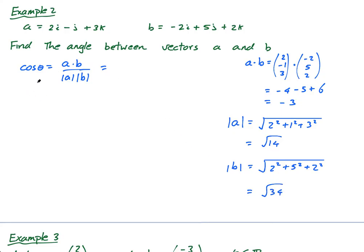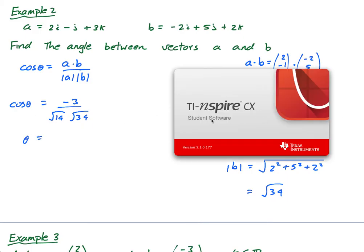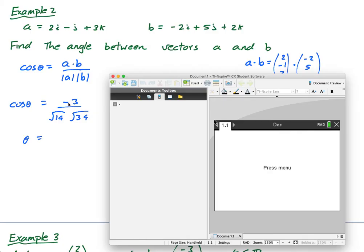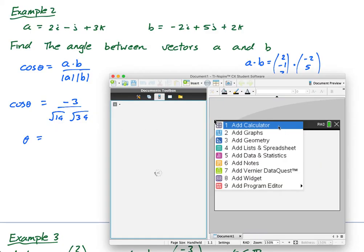So all I need to write here is, cos of theta equals a dot b, which is negative three over, and you don't even have to work this out, just leave it like this, root 14 times root 34. And then theta is equal to, and you can just go straight to your calculator. You don't even need to work this out first.